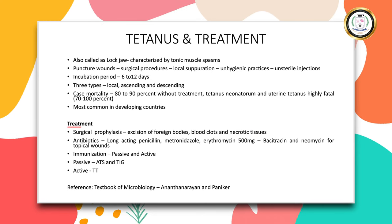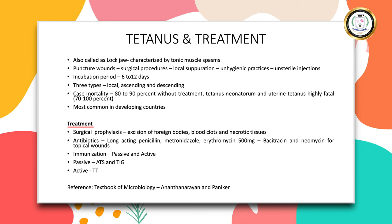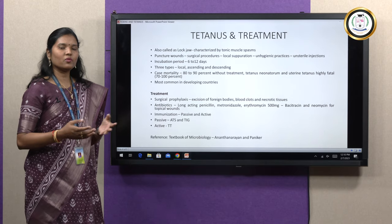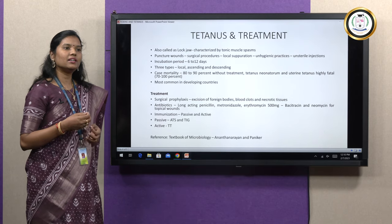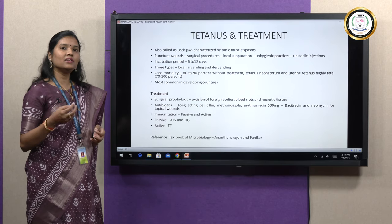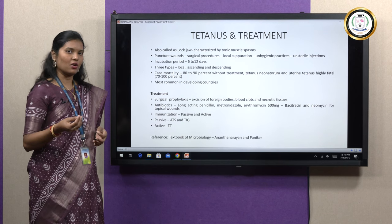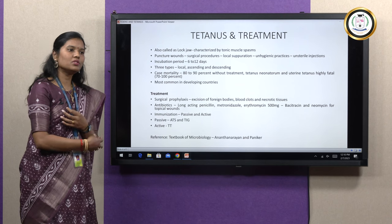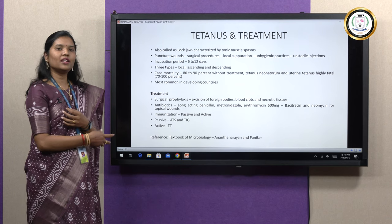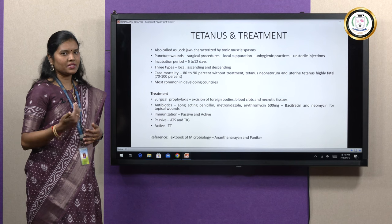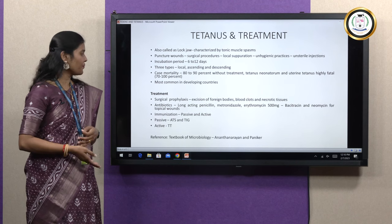Talking about treatment, there are three types: surgical prophylaxis, antibiotics, and immunization. In surgical prophylaxis, we generally excise the wounds, necrotic lesions, foreign bodies and blood clots. If there are any local wounds or necrosis, they are radically excised to prevent organisms from gaining entry into the host.